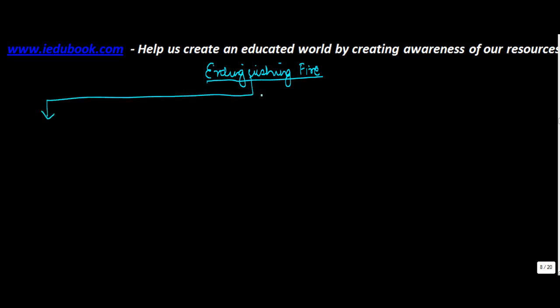Let's understand something about the extinguishment of fire. Fire is never good unless it is being used in a controlled environment. If there is a fire, it can be extremely destructive. We have seen this time and again — for example, in Australia, you keep hearing about fires in the jungle causing so much damage. So if there is a fire which is undesirable, then you've got to extinguish it.